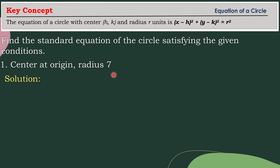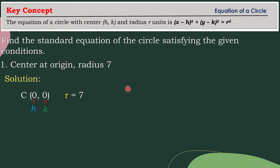Here is the solution. We all know that the coordinates of the origin are (0, 0), and this x-value or x-coordinate will serve as your h, and your y-coordinate will serve as your k. It's already given that the length of the radius is equal to 7. Now we are going to substitute these values to the given equation.